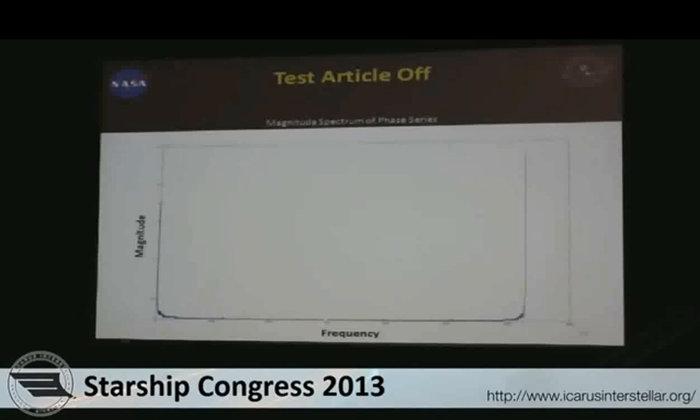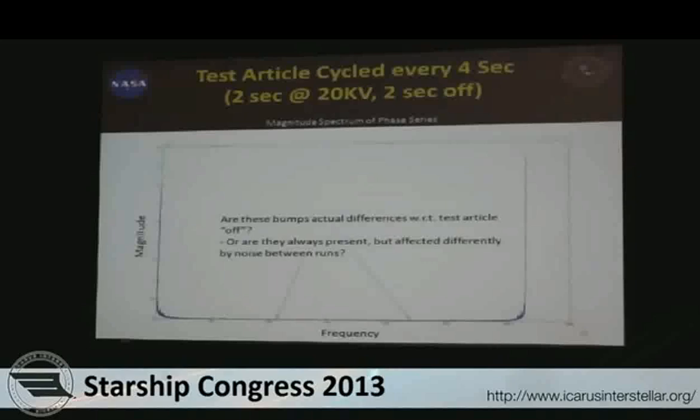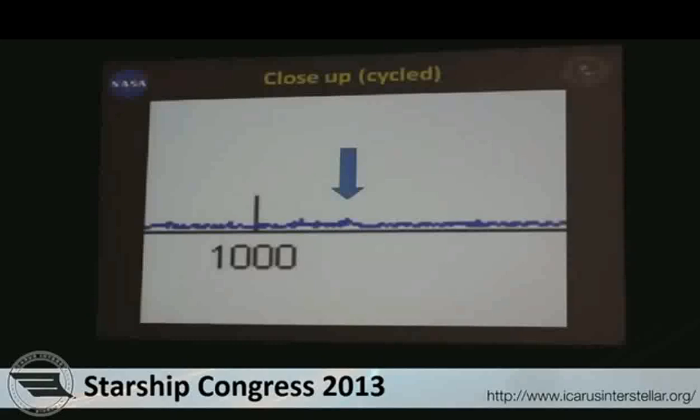Just past the Nyquist frequency, everything on one side is a mirror image — a complex conjugate — of the other side. With the device always off, that's what the spectrum looks like. With the device cycled, when you look at the spectrum close up, there is some small energy we pick up in a couple spots that is a multiple of the Nyquist frequency. So we're seeing a little bit of energy appear in the Fourier series that was not there with the device off. Interesting findings, but certainly not conclusive.